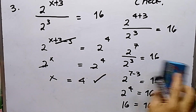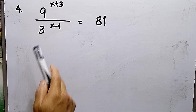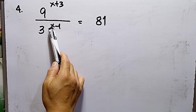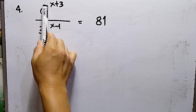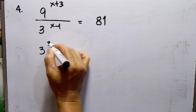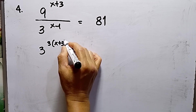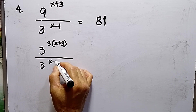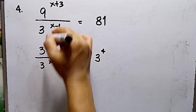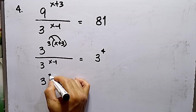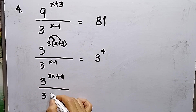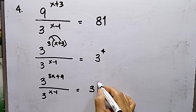Now let's go to the last number, number 4. I have here: 9 raised to the power of (x plus 3) divided by 3 raised to the power of (x minus 1) equals 81. First, I need to rewrite 9 with a base of 3. So 9 can be written as 3 squared, giving 3 squared raised to the power of (x plus 3), divided by 3 raised to the power of (x minus 1). I also rewrite 81 as 3 raised to the 4th power. Then I distribute the 2 inside, giving 3 raised to the power of (2x plus 6) — wait, that is 3 raised to 2x plus — distributing gives 3 raised to (3x plus 9). Copying the denominator: 3 raised to the power of (x minus 1) equals 3 raised to the 4th power.